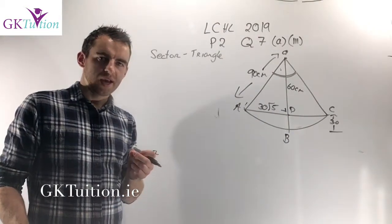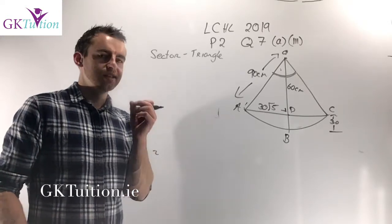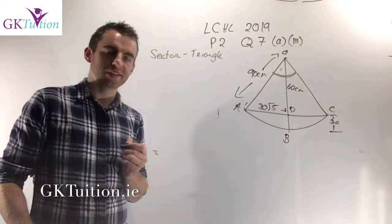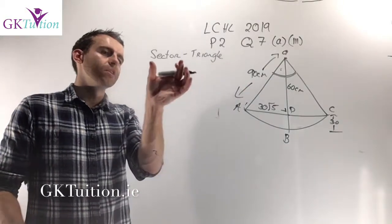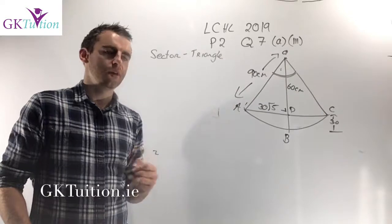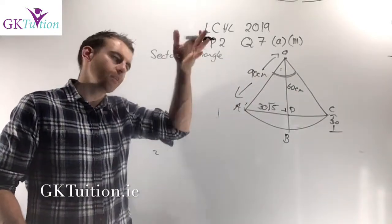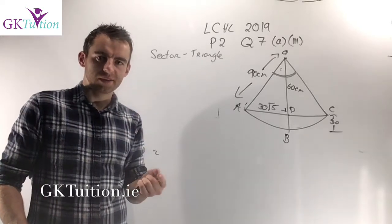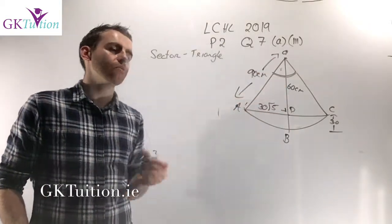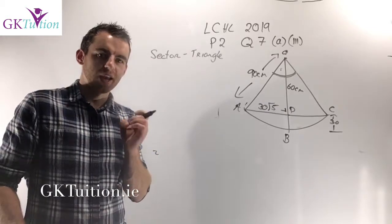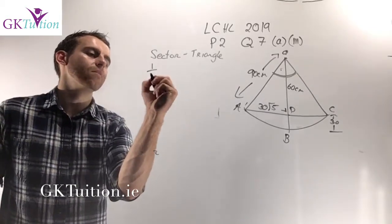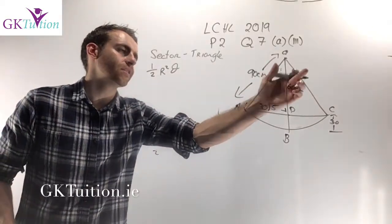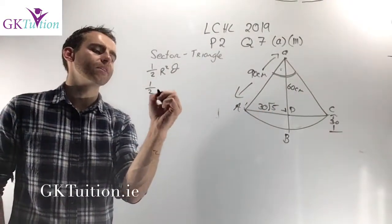The answer needs to be to two decimal places in metres squared, and we're working in radians. The formula for the area of a sector in radians, from the log tables, is one half times r squared times theta, where theta is the angle at the centre. Because we need the answer in metres, I'll convert 90 centimetres to 0.9 metres.